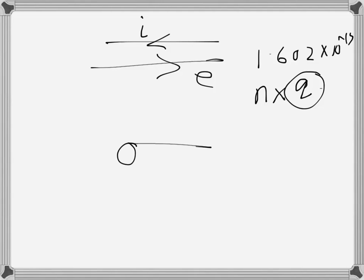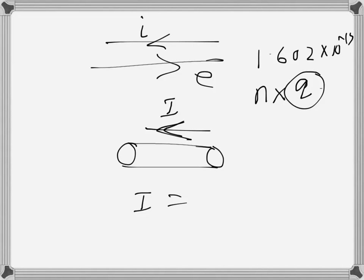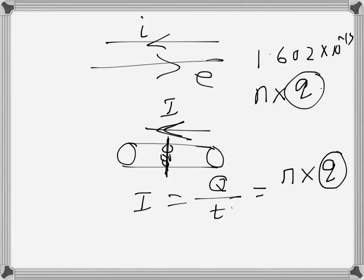Current is defined as the amount of charge that has flowed through a cross-section of a conductor per unit time. So the current I equals q over t. If the number of particles (electrons) is n, the total charge is n times q, where q is the charge of one electron, divided by time t. That gives the value of I in amps. That is current.